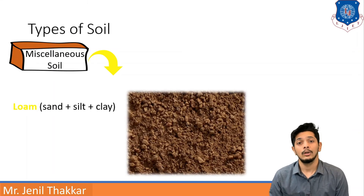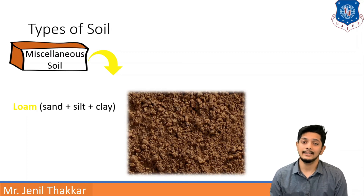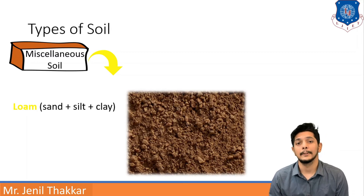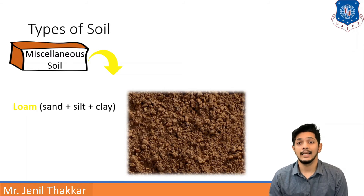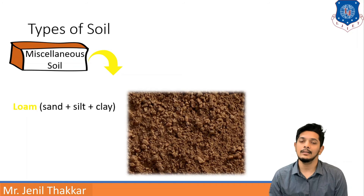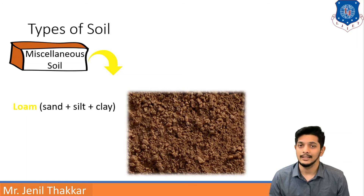The third type is loam. Loam is a very popular soil which is a combination of sand, silt, and clay — not a singular type based on particle size but a mixture of all three. You can see this in the picture.